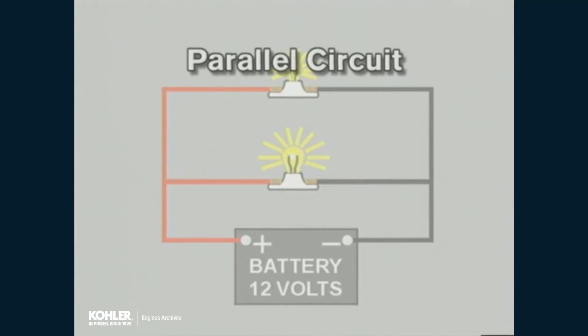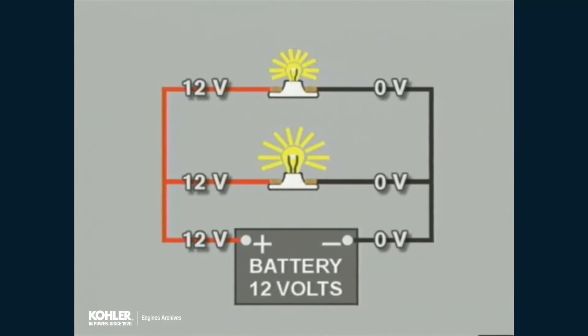When a circuit is arranged with loads parallel, or next to one another, with multiple current paths, the circuit is called a parallel circuit. Because each load in a parallel circuit is connected between positive and negative, the total voltage drop from each load is equal to system voltage.